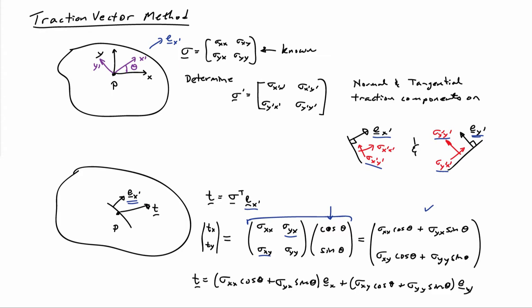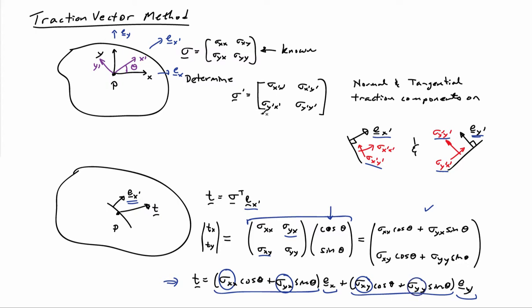I can collapse this down to make it more explicit: the x component of the traction vector multiplies e x, and the y component multiplies e y. Now I have a vector, and transforming this vector will allow me to come to a relationship that connects sigma xx, sigma yx, sigma xy, and sigma yy to the components of the stress in the x prime, y prime coordinate frame.